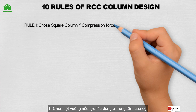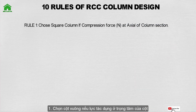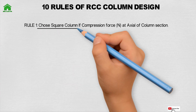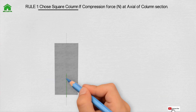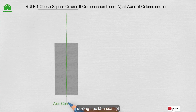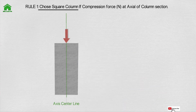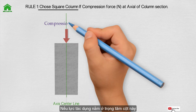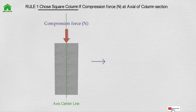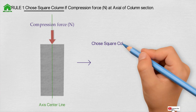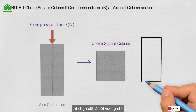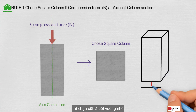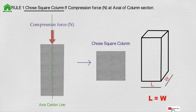Rule number one: choose a square column when the compressive force is at the axis center line of the column section. This is the model of the column section. Here is the axis center line, and this is the compressive force — compressive force at right at the axis center line. So we choose a square column, where length equals width.